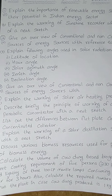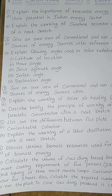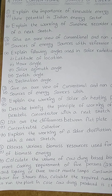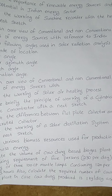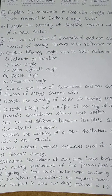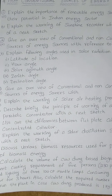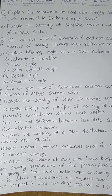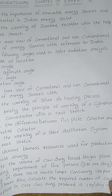Third question: explain the working of a solar air heating process. You have to write about how air is heated with the help of solar energy. For part B, describe briefly the principle of working of a cylindrical parabolic concentrator with a neat sketch. Each and every question emphasizes the importance of knowing the name of the equipment. It is always recommended to remember each piece of equipment related to solar energy so that you can draw it, explain its working principle, and give a good sketch to complete your answer.